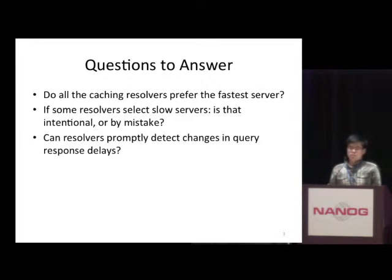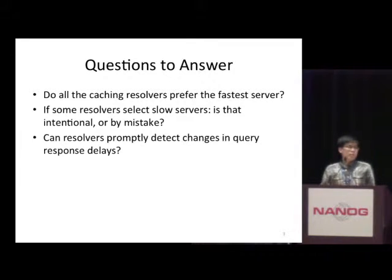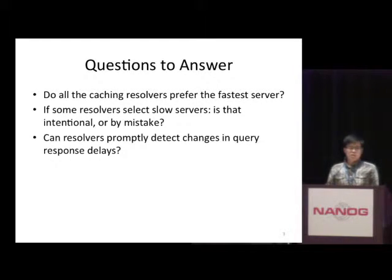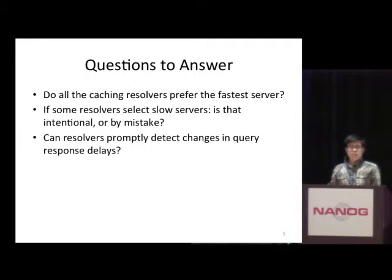In this work, we're trying to answer three questions. The first one is: do all those caching resolvers select the fastest name server? And if we found some caching resolvers that do not select the fastest name server — instead they choose some slower one — we want to understand if that's a mistake or they just intend to do that. The third question is that the network is not always stable. Some name server may become unresponsive occasionally. So we want to know if the caching resolvers can detect the unresponsive name server, and even detect the recovery of those unresponsive name servers.